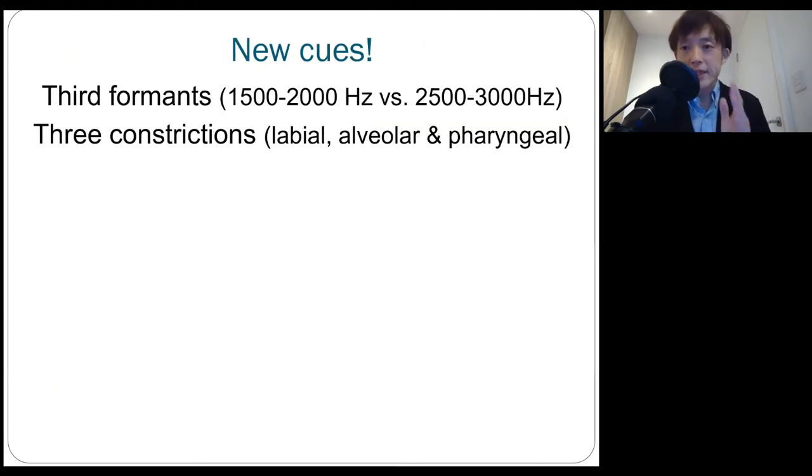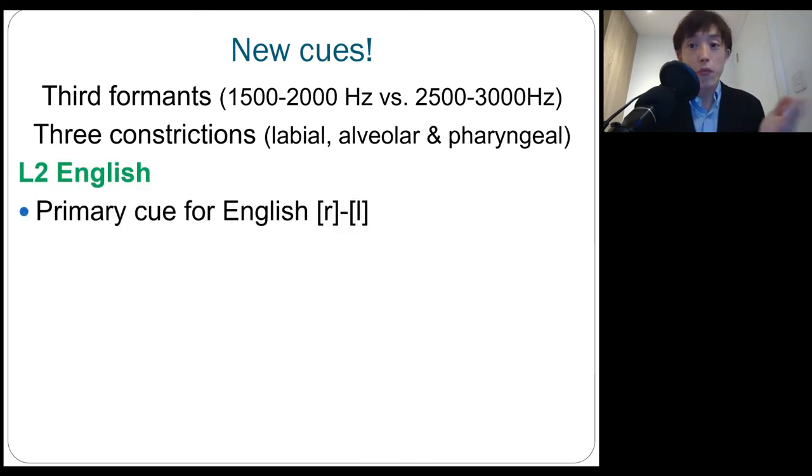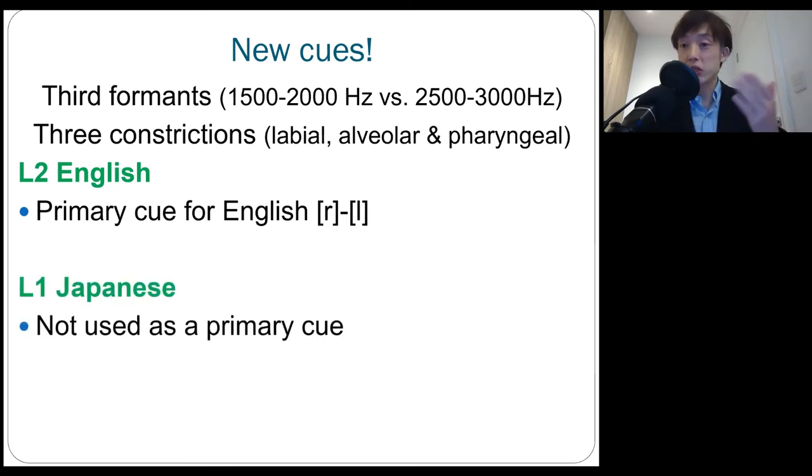But what makes this instance very unique and extremely difficult for Japanese speakers is that in order to acquire English R and L, primary cues are your sensitivity to high frequency information around 2000 hertz versus 2500-3000 hertz. And also in order to produce English R and L, especially R, you need to make three constrictions, labial, alveolar, and pharyngeal, at the very same time. These perception and production cues are obviously used as a primary cue for differentiating R and L, but they're not used as a primary source for differentiating any sounds in Japanese.